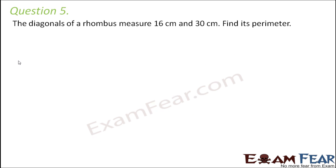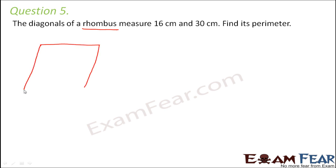Question number 5. The diagonals of a rhombus measure 16 cm and 30 cm. Find its perimeter. A rhombus is a quadrilateral — a polygon with four sides — such that all sides are equal but all angles are not equal. So this is a rhombus where all sides are equal.